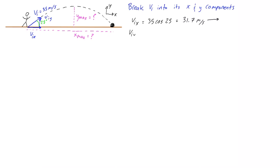For viy, the initial y velocity of the soccer ball, we have 35 times the sine of 25 degrees, which gives us 14.8 meters per second. Again, a positive value indicates that it is going up, as should be clear from the diagram.